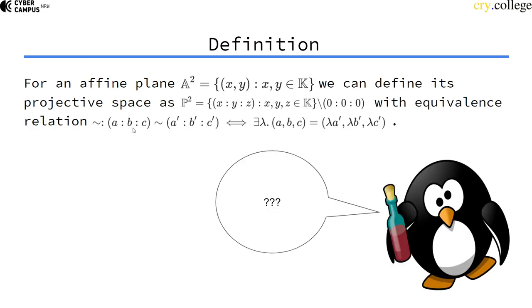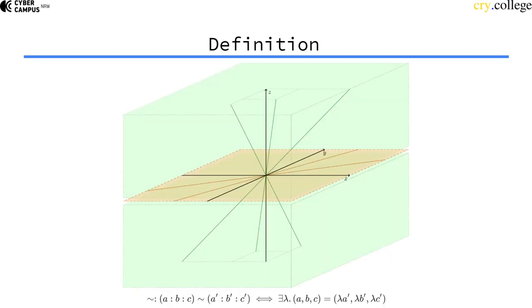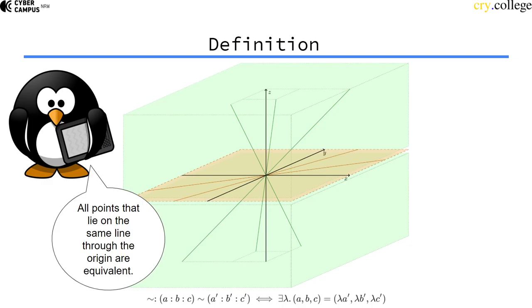So probably I've lost you by now and you don't know what all this equivalence relation is supposed to say. Well, we can try to look at it a bit more geometrically. So the equivalence relation says that all points that are on the same line that goes through the origin are considered equivalent in the projective space. So here, this line, all points in the projective space x, y, and z that lie on this line going through the origin are considered equivalent in our equivalence relation.